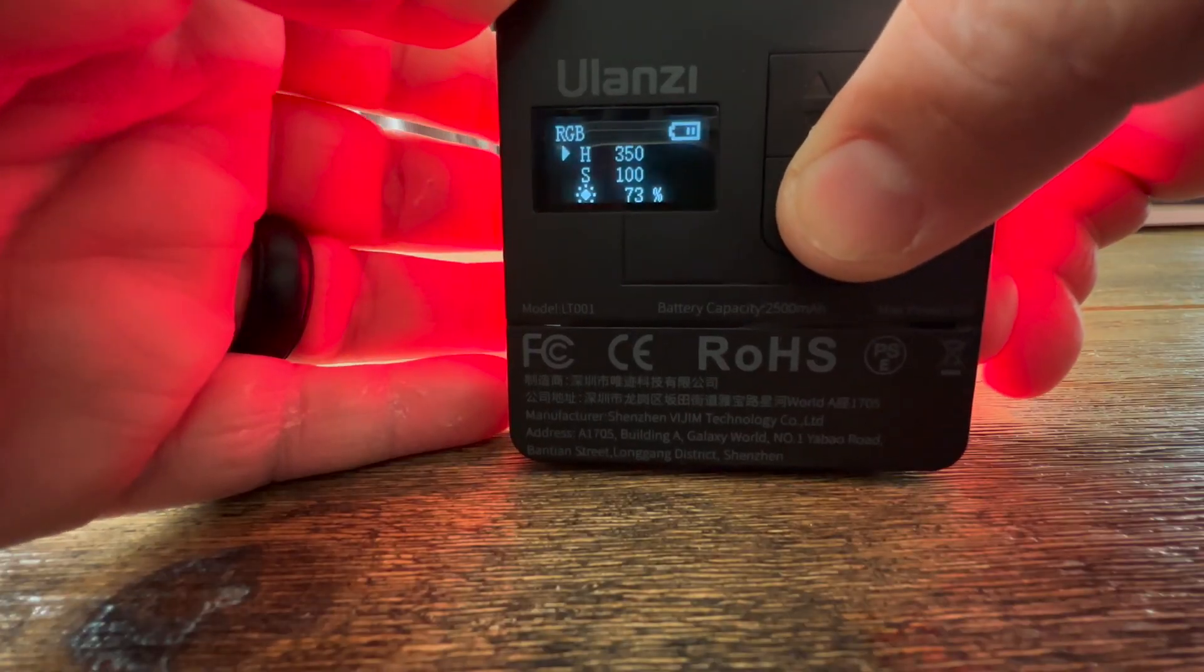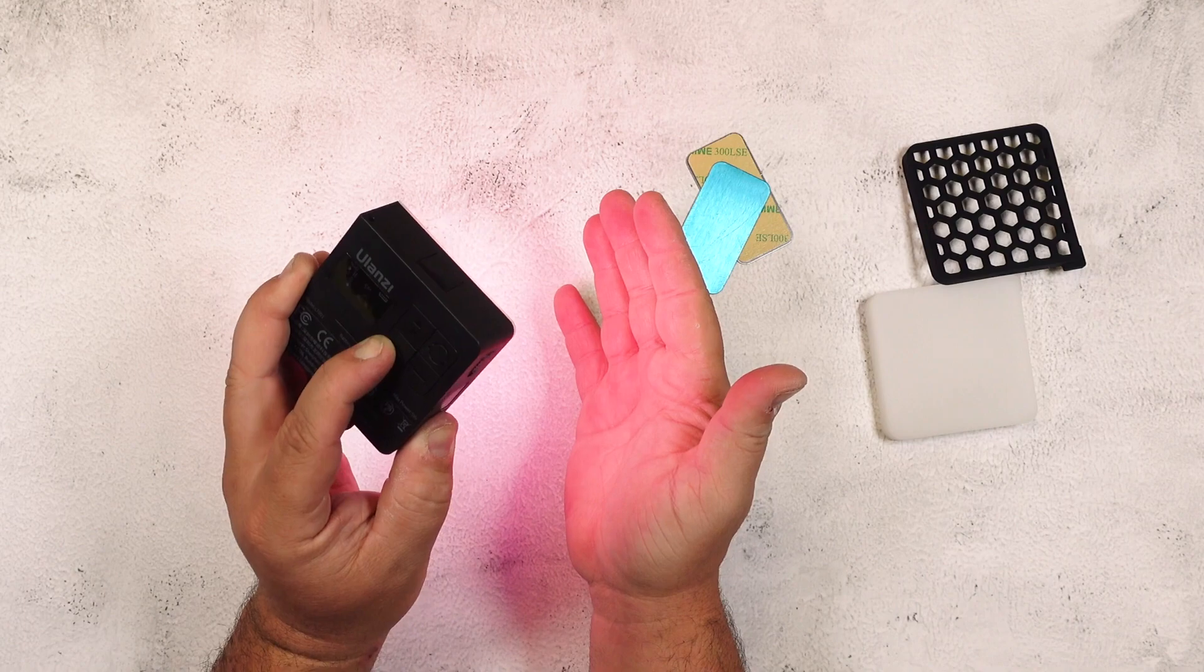You could put it on RGB mode and pick any color of the spectrum that you want and even adjust the saturation levels which makes it great for putting it in the background to get some kind of mood lighting.